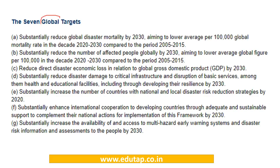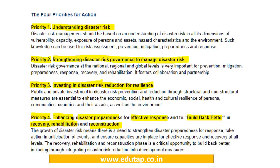The seven global targets of the Sendai Framework include reducing direct disaster economic loss in relation to global GDP by 2030. You do not need to memorize each target, but remember there are seven global targets and four priority areas for action: understanding disaster risk; strengthening disaster risk governance; investing in disaster risk reduction for resilience; and enhancing disaster preparedness for effective response and to build back better in recovery, rehabilitation and reconstruction.